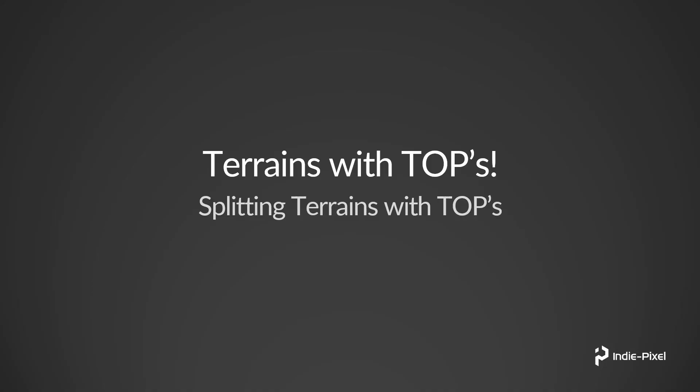Let's finish up this section by splitting the terrain up into a bunch of little tiny tiles. This is a good thing to do especially when you start utilizing things like occlusion culling — this way we're not having to draw the entire terrain if we're not looking at it. By splitting it up into tiles we get the ability to hide those tiles and save a little bit of performance.